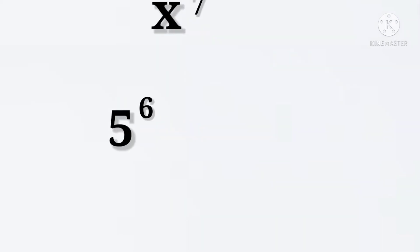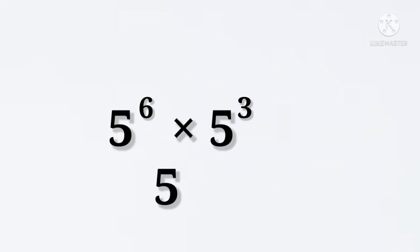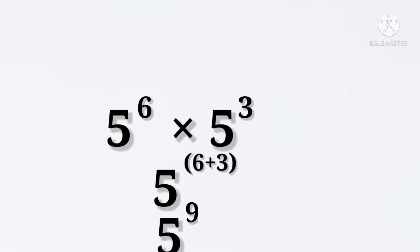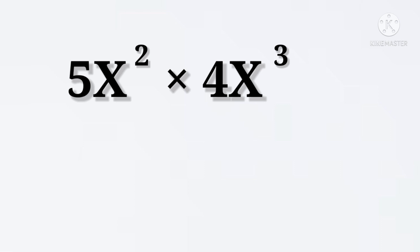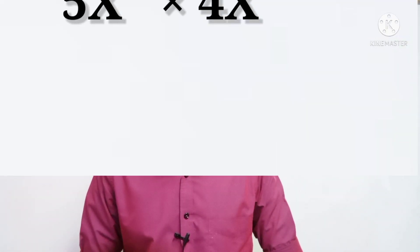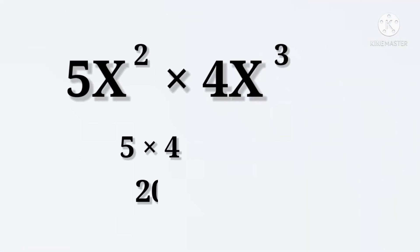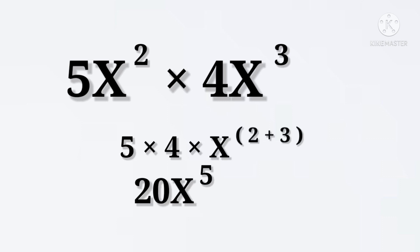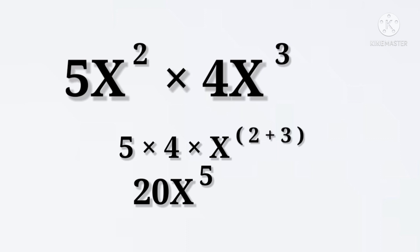In the example, x to the power 3 into x to the power 4 is x to the power 7. 5 to the power 6 into 5 to the power 3 is equal to 5 to the power 9. In another example, 5x to the power 2 into 4x to the power 3: we multiply the coefficients — 5 into 4 is equal to 20, x to the power 2 plus 3 is x to the power 5. So the final answer is 20x to the power 5.